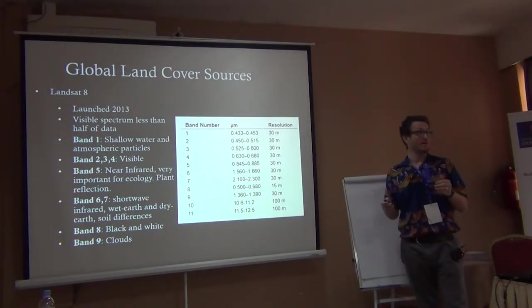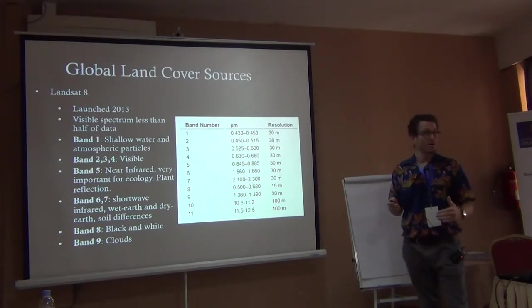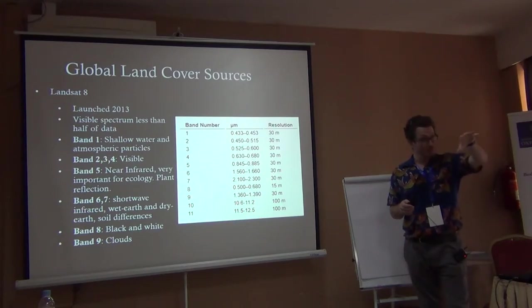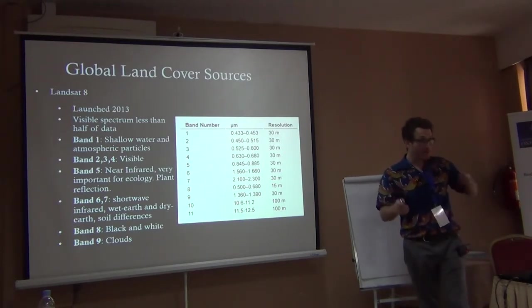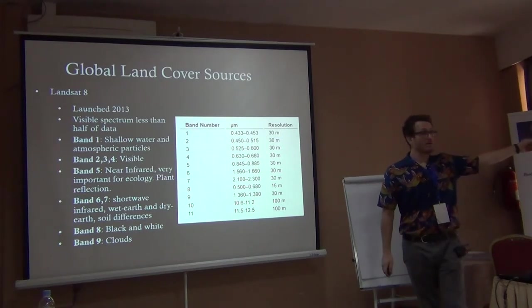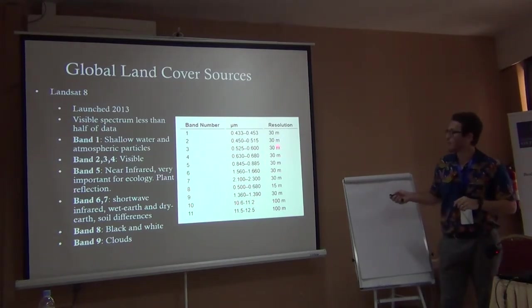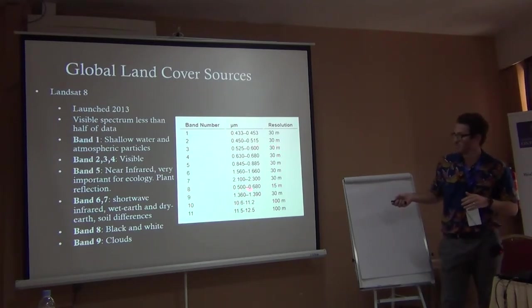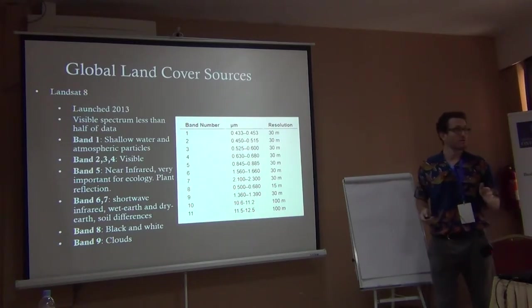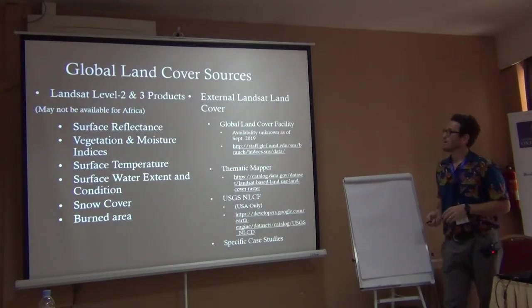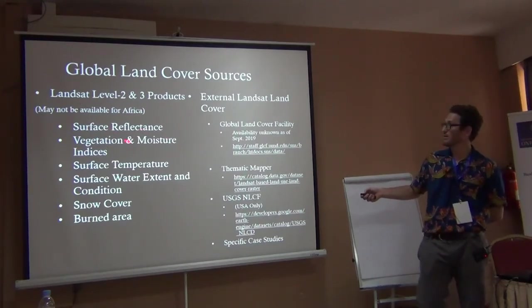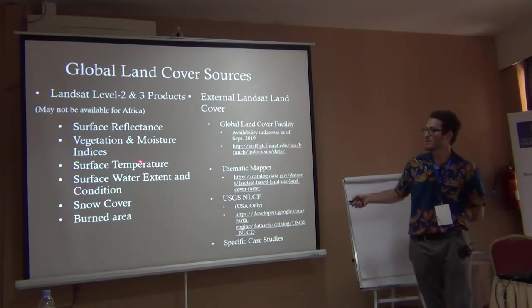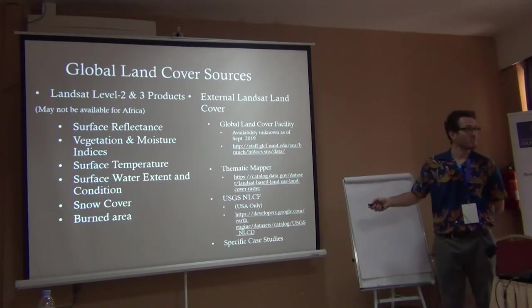One cell from the satellite can cover from here to the back wall and tell you whether it's tile flooring or grass. But 30 meters is more typical, and still pretty good. Many Landsat Level 2 and 3 products give you surface reflectance — which wavelengths are being reflected — and they also calculate vegetation and moisture indices, temperature, snow cover, and burned area, which you can get directly from Landsat.